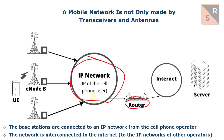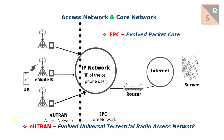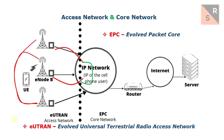We'll get into the details in other videos. We have two subnetworks: the access network and the core network. The access network is made up of the set of E-Node B's, as you can see. Because they are connected to the same IP network, they can communicate with each other. In the standard, the access network is called E-UTRAN, which stands for Evolved Universal Terrestrial Radio Access Network.